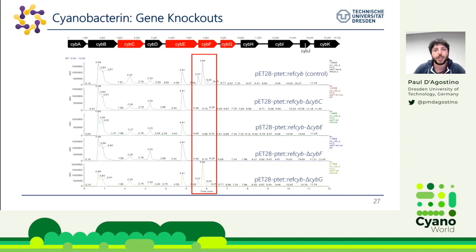With all our knockouts completed, we focused on four genes — C, E, F, and G — because these were the ones we really couldn't predict the function of. In the control chromatogram, cyanobacterin-like molecules are produced. In the C, E, and F knockouts, production was completely abolished. In the G knockout, production remained active. Therefore, genes C, E, and F are essential for biosynthesis.